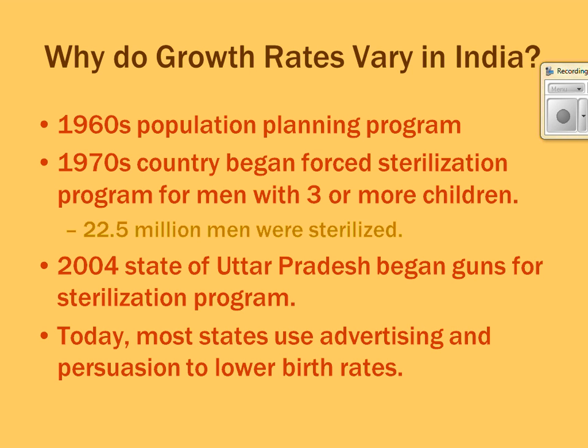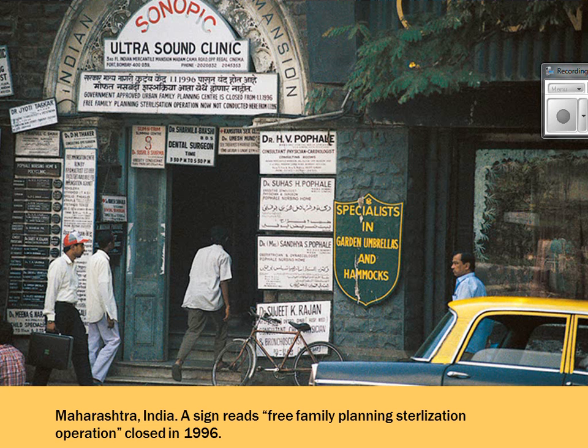As India industrializes, they will find a reduction in birth rate. This picture shows ultrasound clinics in India where people can find out the sex of their baby, and also get sterilization or birth control very easily.